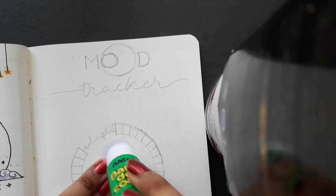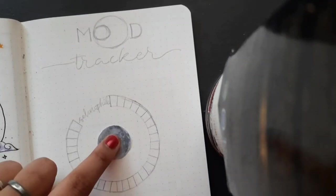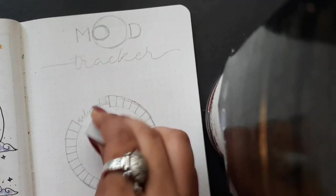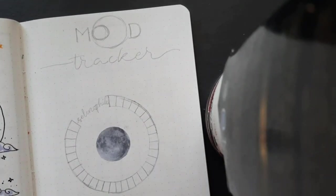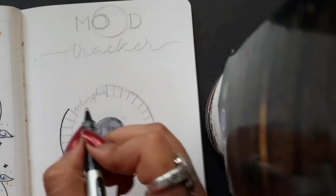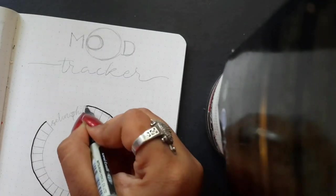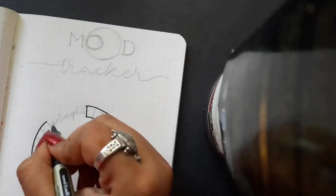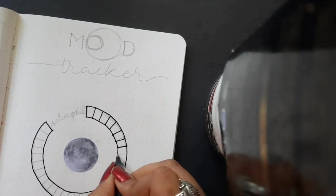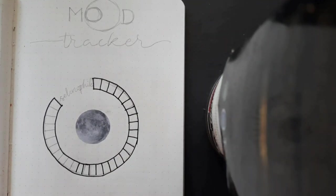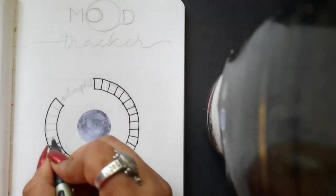Now let's move to our mood tracker. For this we're gonna first start off with sticking the moon at the center of that circle. The circle is like, you know, first you gonna draw the small circle and then another big circle, and then you gotta divide the circle into smaller sections. There are 31 days in the month of May, so you gotta divide it into 31 parts.